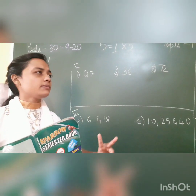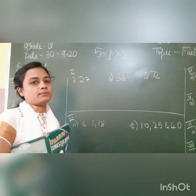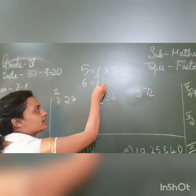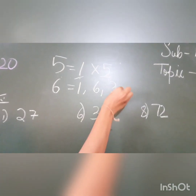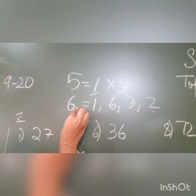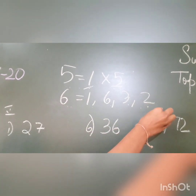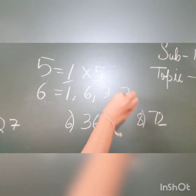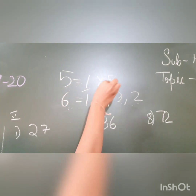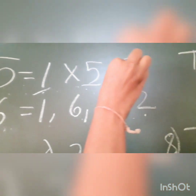You have two types of numbers: prime number and composite number. If it is not a prime number, then it is a composite number. Example: 6. The factors for 6 are 1, 2, 3, and 6 — so it is a composite number. If it has more than two factors, it is a composite number. If it has only two factors, that is 1 and the number itself, it is called a prime number.